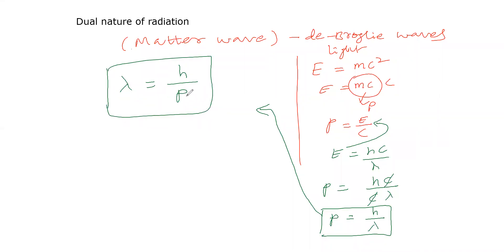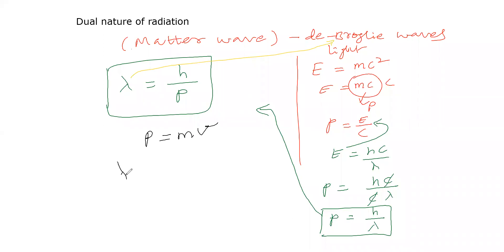If there is a particle in motion, there is momentum. When there is momentum, Planck's constant h creates the de Broglie wave associated with the moving particle. For a particle of mass m moving with velocity v, the momentum is equal to m times v. So the wavelength formula is λ = h/mv — that is the de Broglie wavelength.